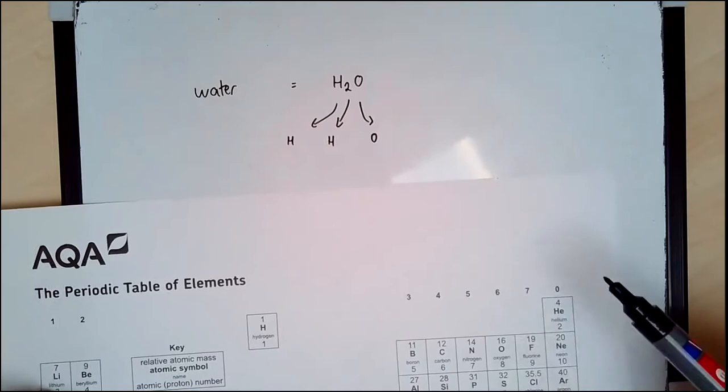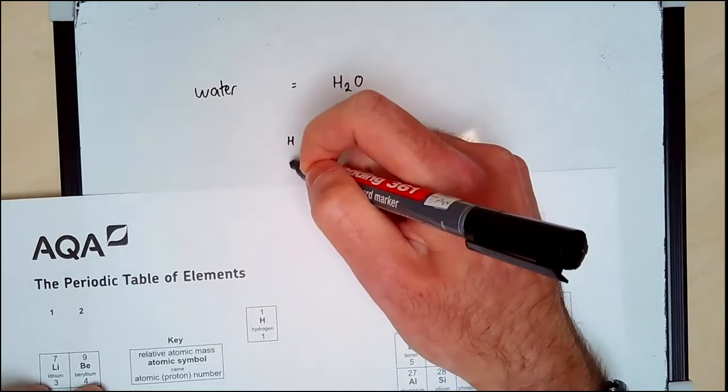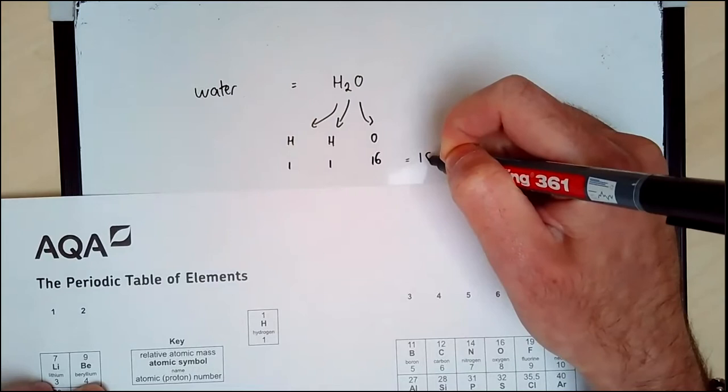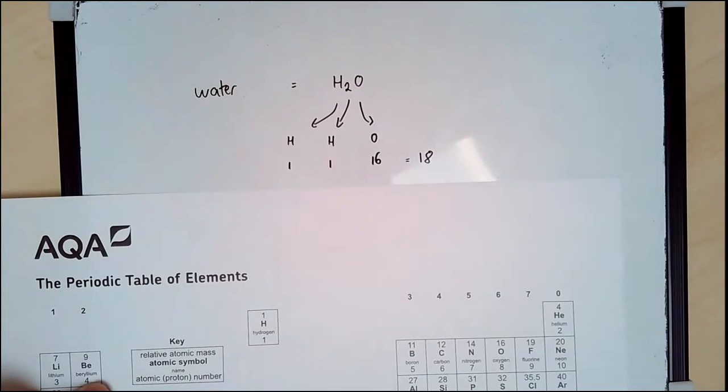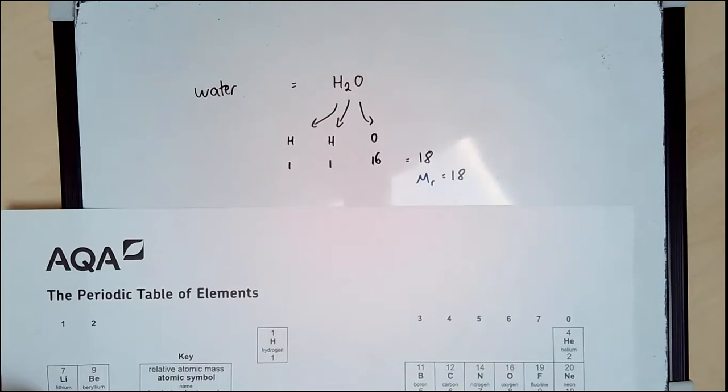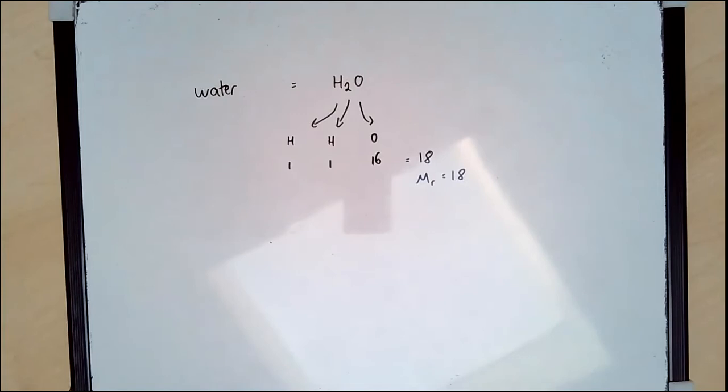When I go to my periodic table, I can find hydrogen with a mass number of one, and oxygen has relative atomic mass 16. If I add all those together, I get 18. That is called the formula mass, the relative formula mass. Sometimes we give it a symbol Mr. That's our formula mass, that gets us a mark in the exam. Very straightforward.